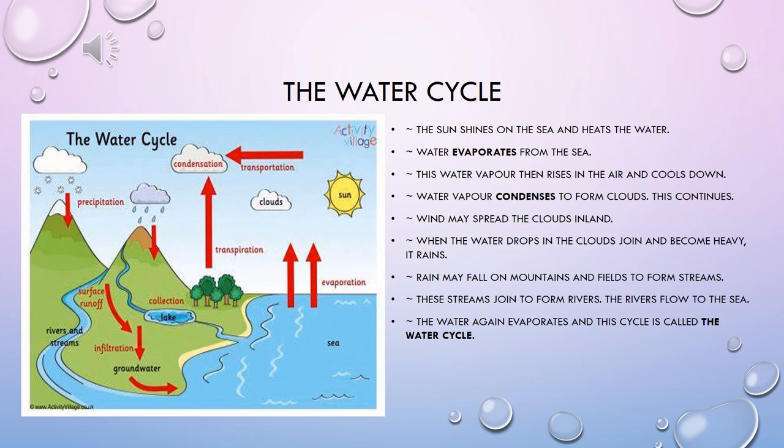The sun shines on the sea and heats the water. Water evaporates from the sea becoming water vapor. This water vapor then rises in the air and cools down. The water vapor condenses to form clouds. This continues. The wind may spread the clouds inland and away from the sea. When the water drops in the clouds join and become heavy, it rains — otherwise known as precipitation.